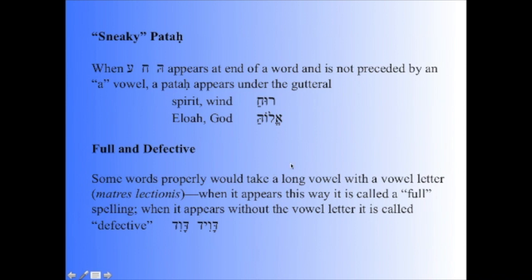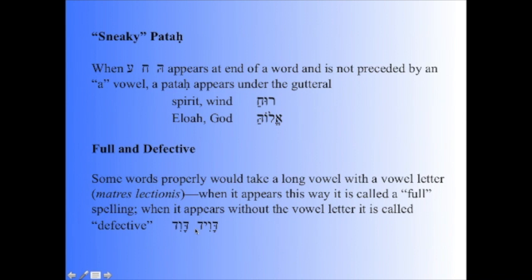Some words properly would take a long vowel with a vowel letter, Matris Lectionis. When it appears this way it is called a full spelling. When it appears without the vowel letter it is called defective. So we would expect that David, the name of David, would be written with a long vowel — the Hireq-Yod. But most often when it appears in the Hebrew Bible it appears without the Yod, just the Hireq. And yet what's in the background historically is the Hireq-Yod; it is a long vowel. So it is written 'David' and it is called a defective spelling.